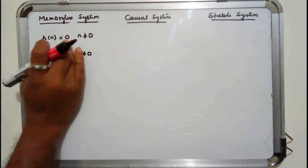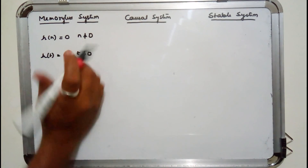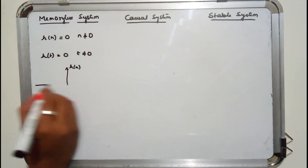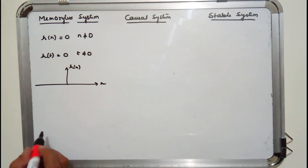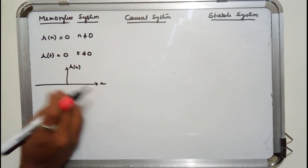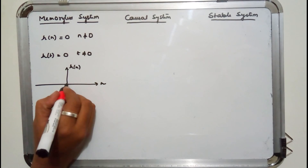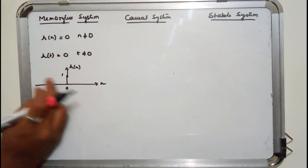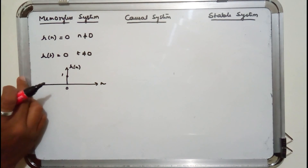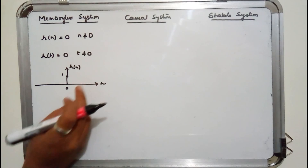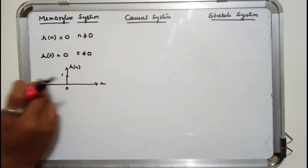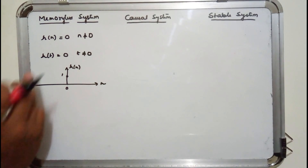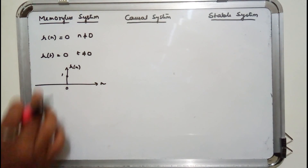What this means is h[n] is zero for n not equal to zero. If you plot h[n], it must be zero for n not equal to zero — at n=0 it will have some value, say one. For n not equal to zero, meaning all negative values till minus infinity and all positive values till plus infinity, if there is no sample to the left or right of n=0, then it is called a memoryless system.